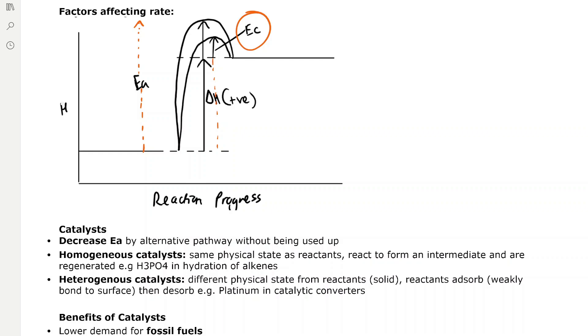There's two types of catalysts: homogeneous catalysts, which are in the same physical state as reactants, so they react to form an intermediate and are regenerated, for example phosphoric acid in the hydration of alkenes.